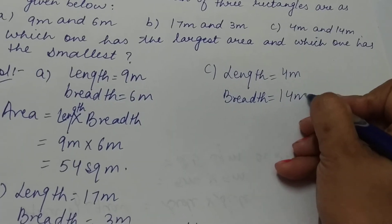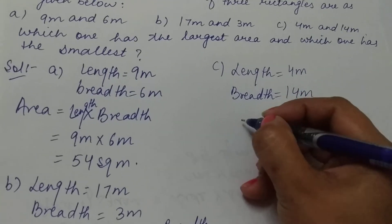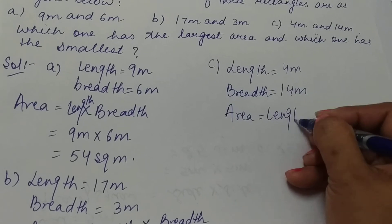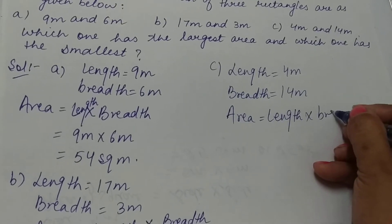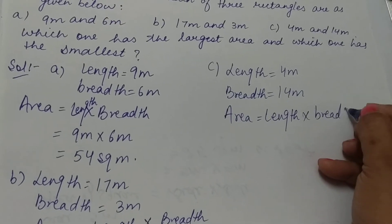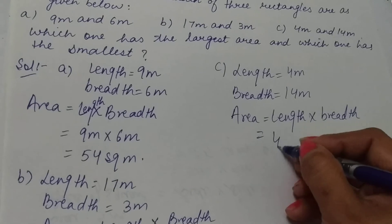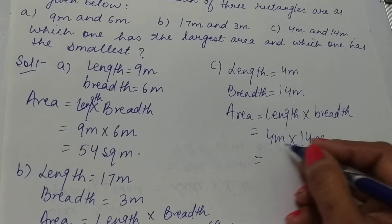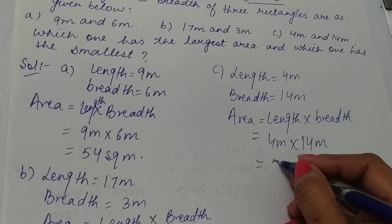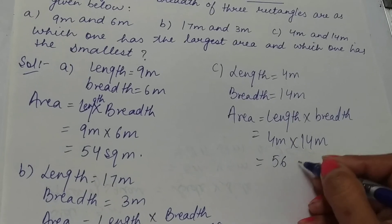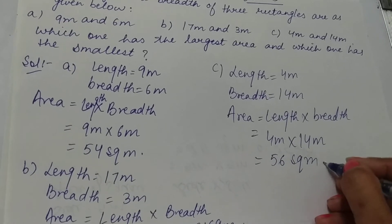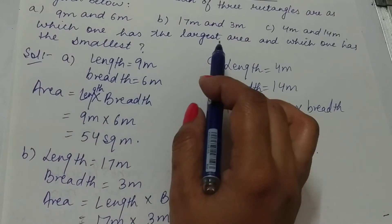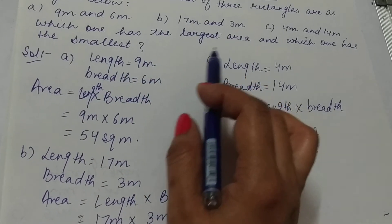For part C, length is 4 meters and breadth is 14 meters. Area of rectangle is length multiplied by breadth, so 4 meters multiplied by 14 meters, and 14 fours are 56 — so this is 56 square meters.